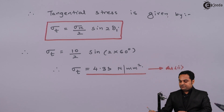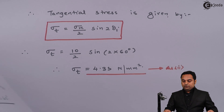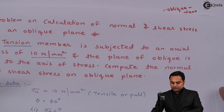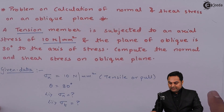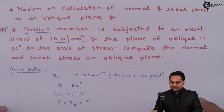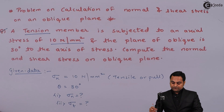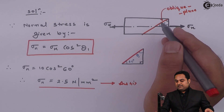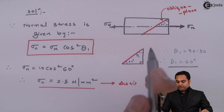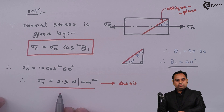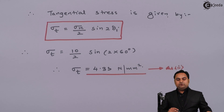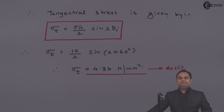This is the second answer. Looking back at the problem, the question was to calculate the normal and shear stress on the oblique plane, which is the inclined plane. We have found the normal stress as 2.5 N/mm² and shear stress as 4.33 N/mm² on the oblique plane, and with this we complete the problem. Thank you.